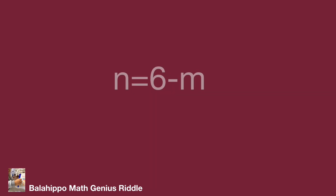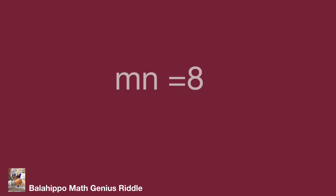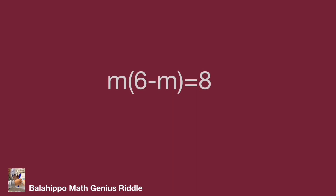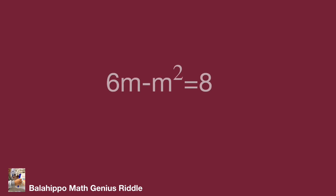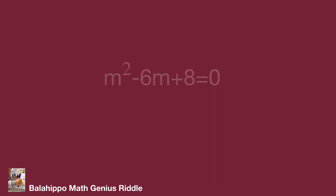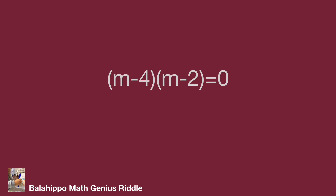So n equals 6 minus m. Substitute n by 6 minus m into mn equals 8. Then m times (6 minus m) equals 8. Multiplying out and moving all terms to one side, we get m squared minus 6m plus 8 equals 0. Factorizing gives quantity (m minus 4) times (m minus 2) equals 0. So m equals 4 or m equals 2.